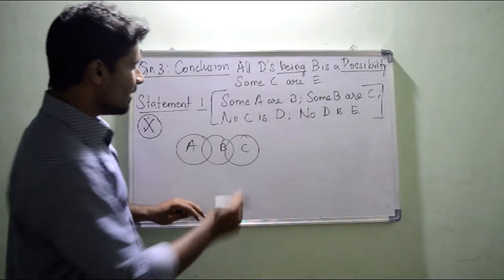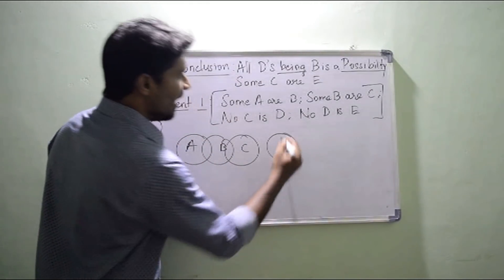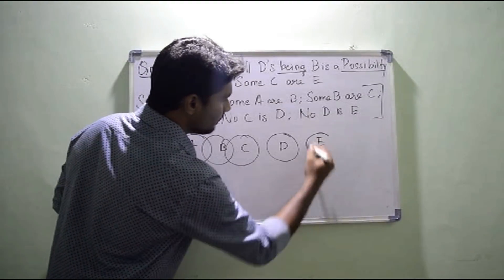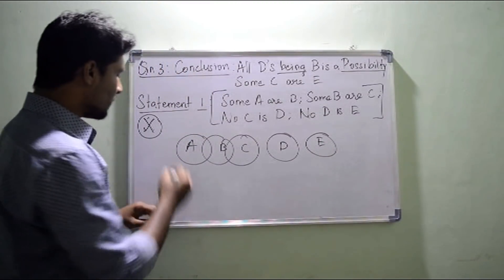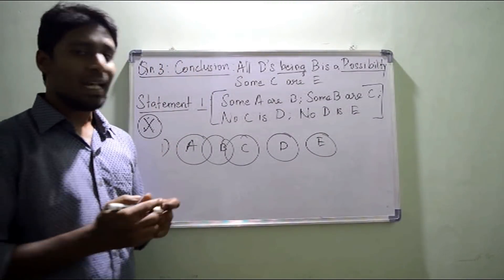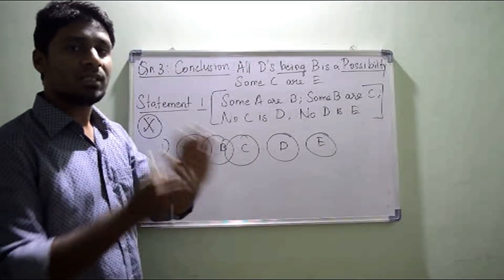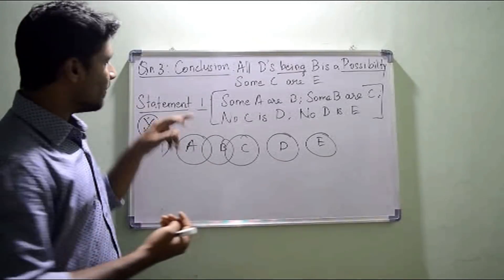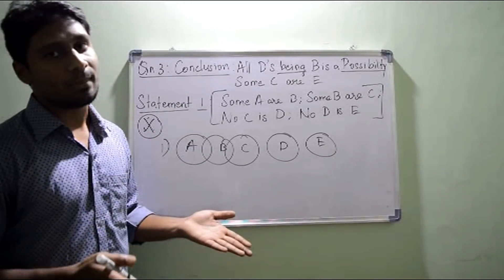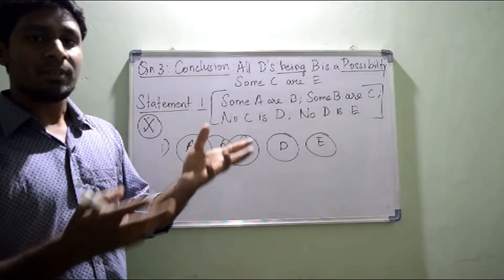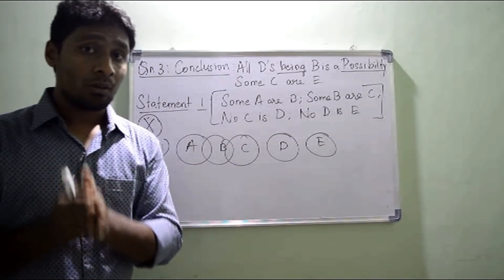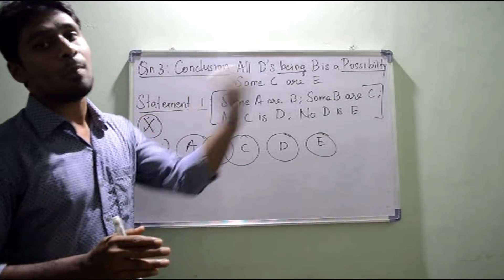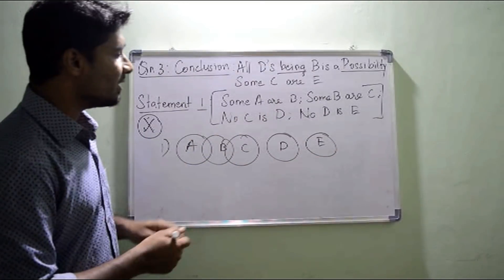No C is D, so no C is D. And no D is E, so no D is E. This is the first possible diagram. I am simply drawing the statement as it is — I'm not going for any possible diagrams. If you are getting a lot of statements, don't go for any possible diagrams. This rule applies only for reverse syllogism, not for normal syllogism.